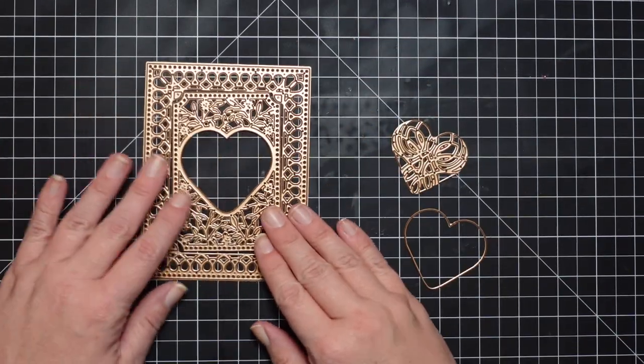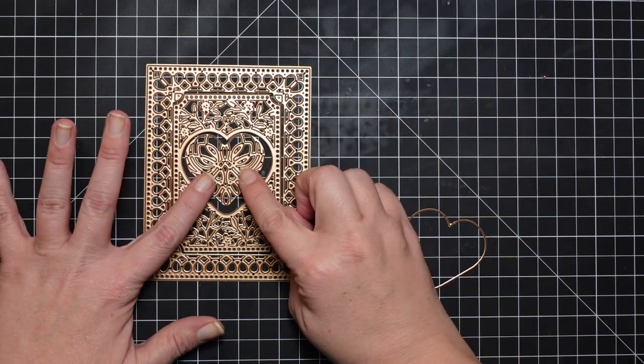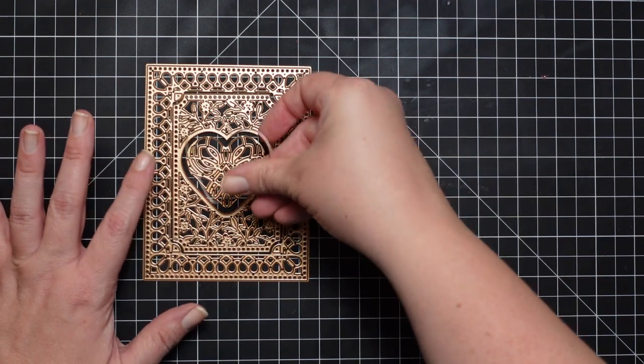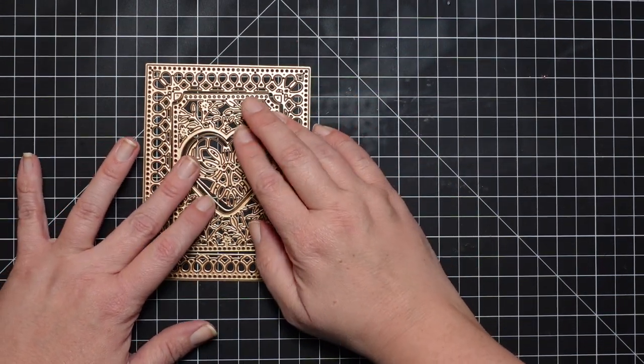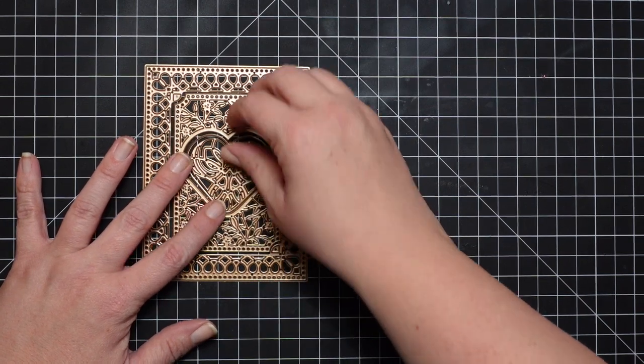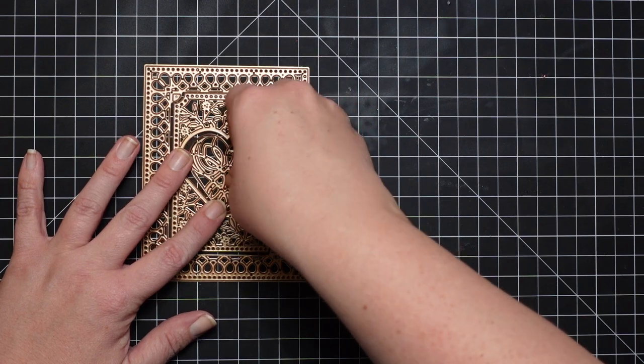And then you get these two heart pieces. This one only cuts out the inside of the heart, and then you have this one that will cut the outside of the heart. And I'm going to die cut all of these so you can see them all, but I wanted to show you how the dies kind of nest in with each other.